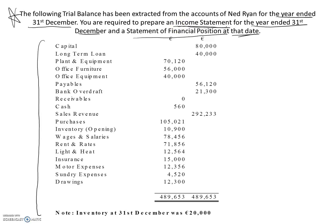We will start off with the income statement. The income statement has two components to it: a trading account and a profit and loss component. We will go down through the trial balance and the additional information and label where everything is going to go. If it is going to go into the income statement, we will put little T for trading account beside it, or little P for profit and loss account. If it is going to go into the statement of financial position, also known as the balance sheet, we will put little B beside it.